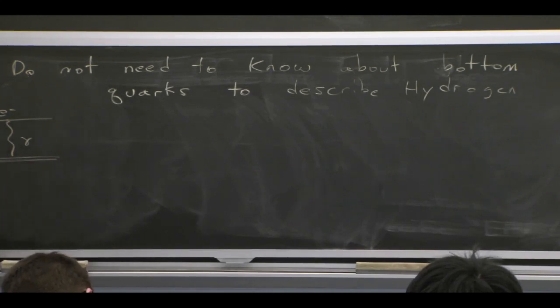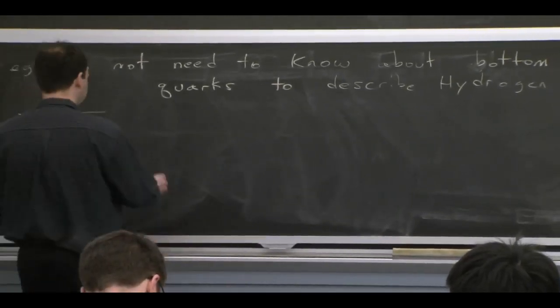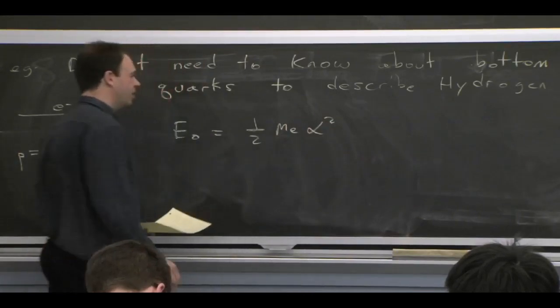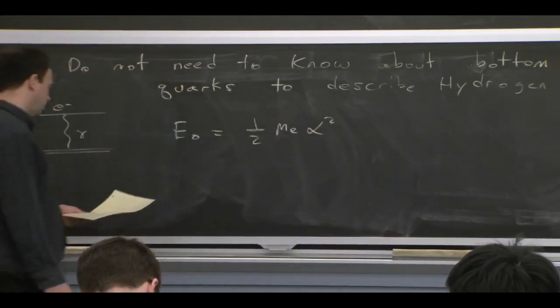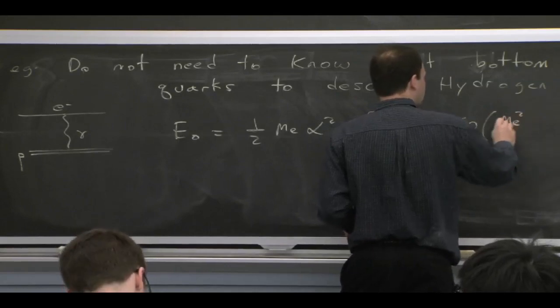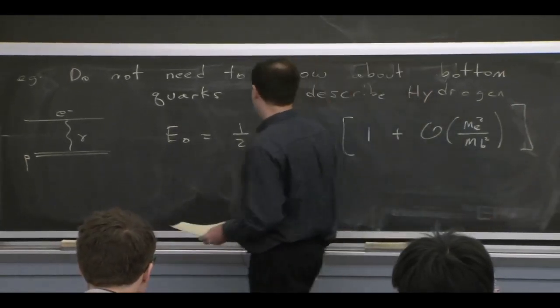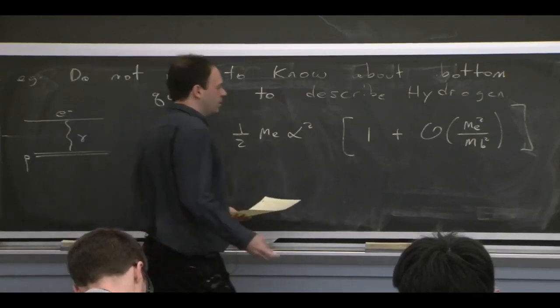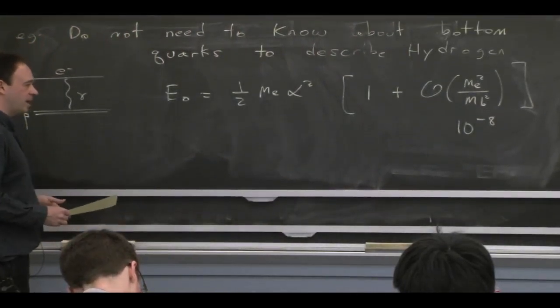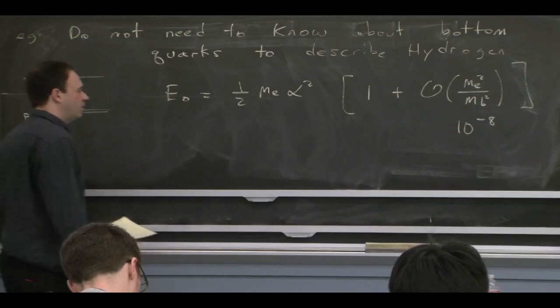What did you have in your description? In a quantum field theory language, you had this diagram. You had an electron and a proton with photon exchange. And when you thought about the binding energy, if we work in units where h bar and c is 1, then the binding energy is 1/2 m_e alpha squared. If you ask about the bottom quarks, the reason that you didn't need them is because they were suppressed. They're at the 10 to the minus 8 level, because they come in suppressed by the mass of the electron squared over the mass of the bottom quarks squared.